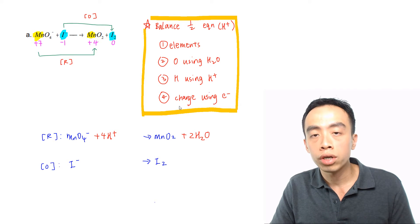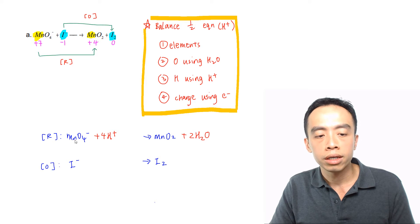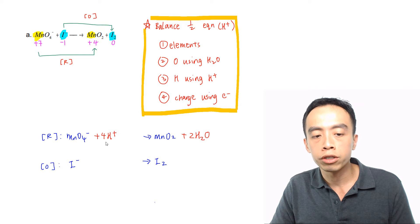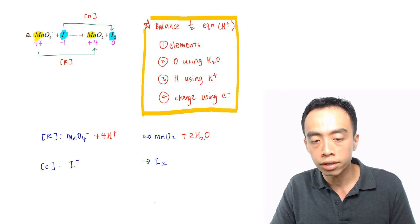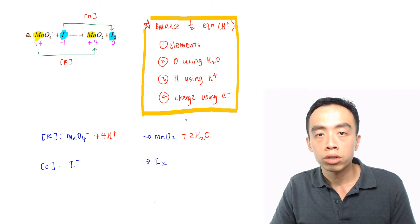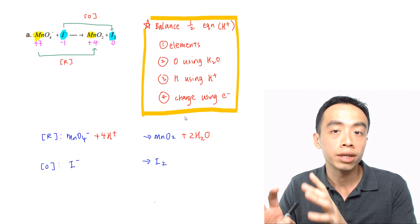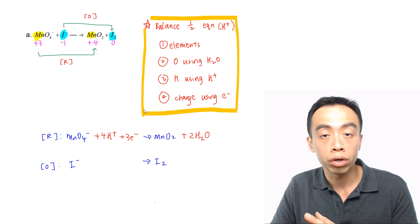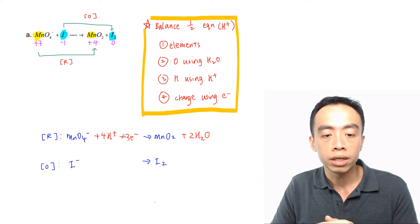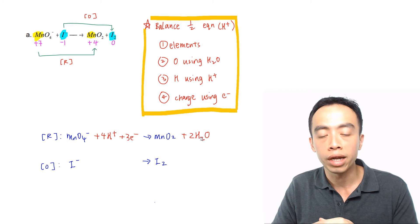Lastly, I balance charge using electrons. Left-hand side: MnO4- is -1 charge and 4 H+ gives +4, so overall the left-hand side is +3. Right-hand side is neutral. Since electrons are negatively charged, I put them on the left-hand side — I need 3 electrons on the left-hand side. This is the balanced half equation for my reduction.